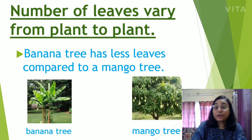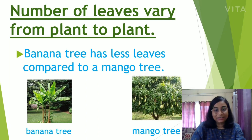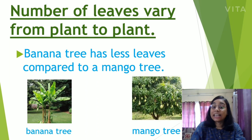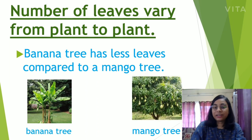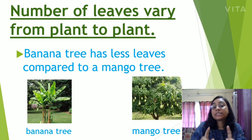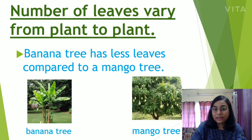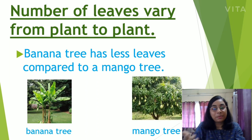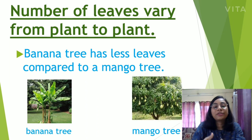The number of leaves also varies from plant to plant. A banana tree has fewer leaves compared to a mango tree. Children, have you seen a banana tree? You can almost count the number of leaves on it. But a mango tree, a banyan tree, or a rose plant can have thousands of leaves.